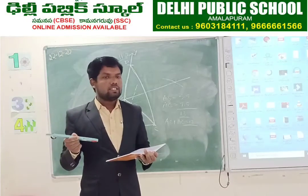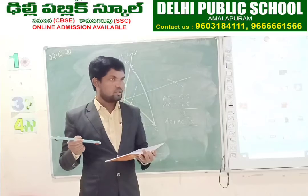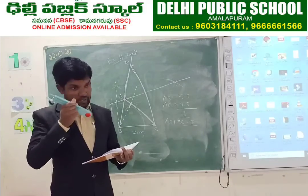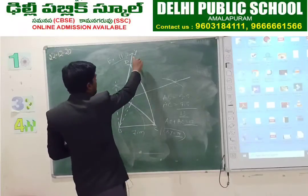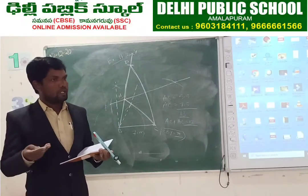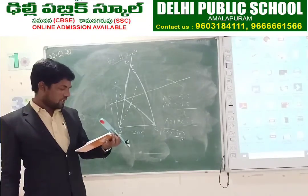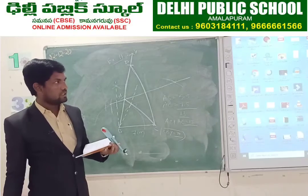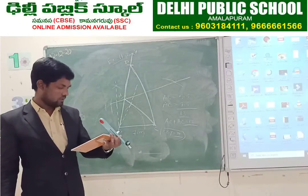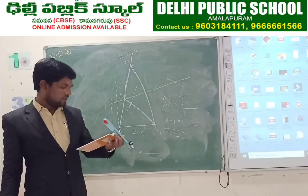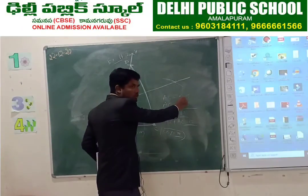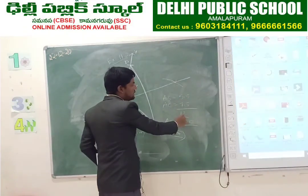Steps of construction: First, draw line segment BC equal to 7 centimetres. Second, at point B, construct an angle of 75 degrees. Third, cut BD equal to 13 centimetres from B. Fourth, join CD. Fifth, draw a perpendicular bisector of CD which intersects BD at A. Sixth, join AC. Triangle ABC is the required triangle. AB plus AC will equal 13 centimetres.